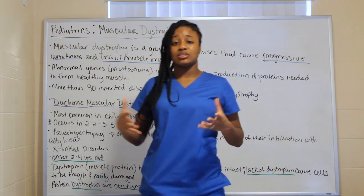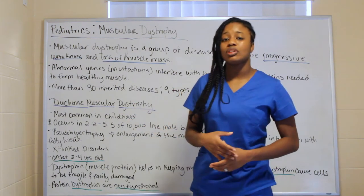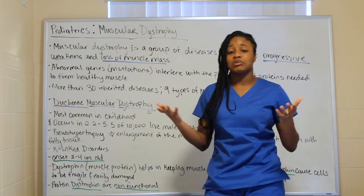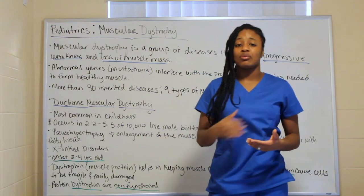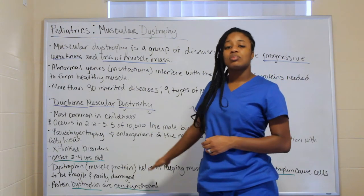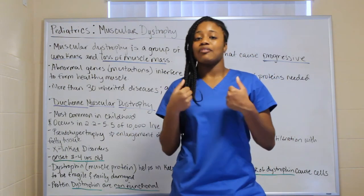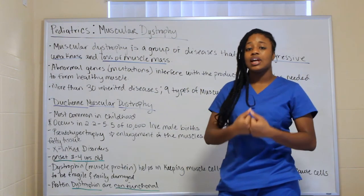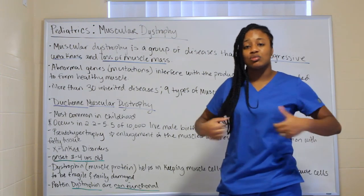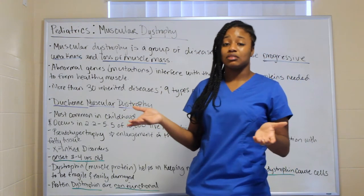When those directions are wrong, what gets built is wrong. That's what happens here — wrong directions are given, and the protein that keeps muscle cells intact — dystrophin — is affected. Without it, the muscles are as frail as a newborn's, even in a grown person.